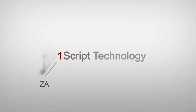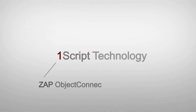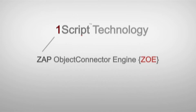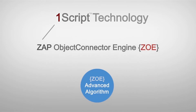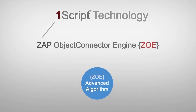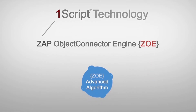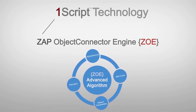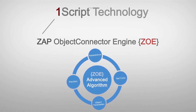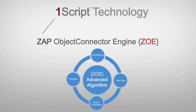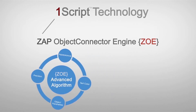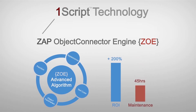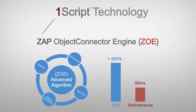This is possible with OneScript technology, which uses the Zap Object Engine and Advanced Object Algorithm Framework, utilizing multiple visual parameters of objects under test. OneScript technology tremendously increases ROI and reduces maintenance of test automation frameworks.